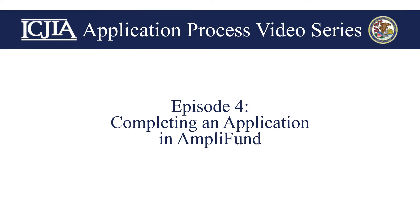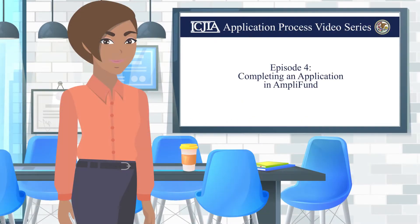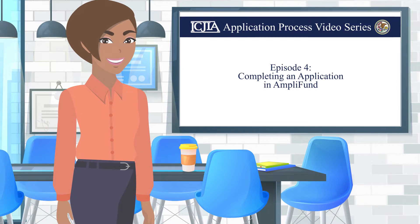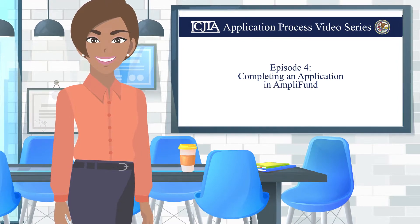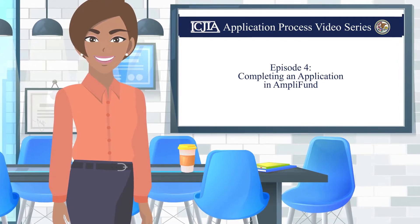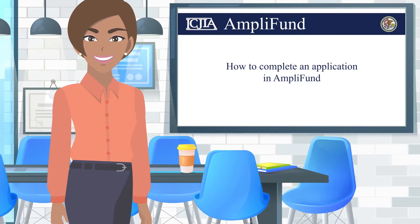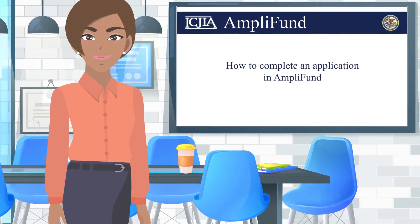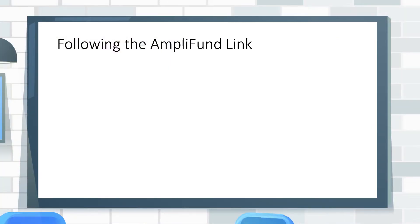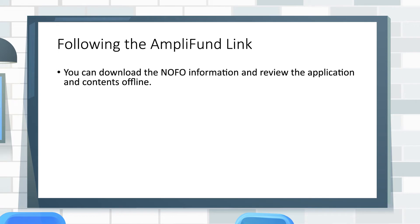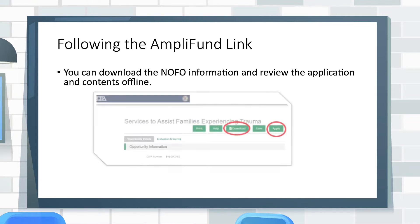How to Complete the Application in Amplifund. If the funding opportunity states that the application is to be completed and submitted via Amplifund, a direct link to that opportunity will be provided in the Notice of Funding Opportunity. The link will take you to the General Amplifund page, where you are given an option to download the instructions and application components to be reviewed offline. It is important to read through the application and requirements to determine if this opportunity is a good fit.